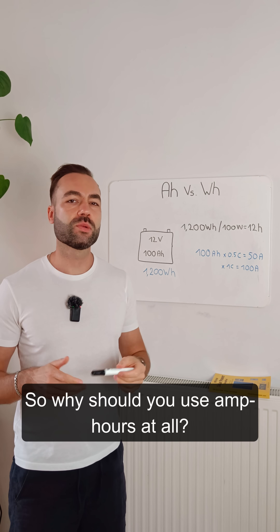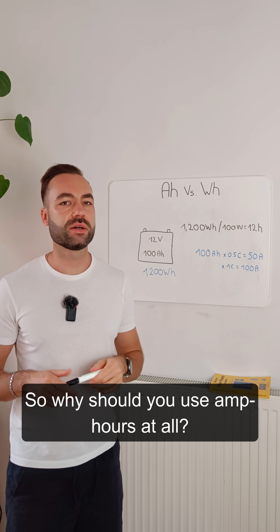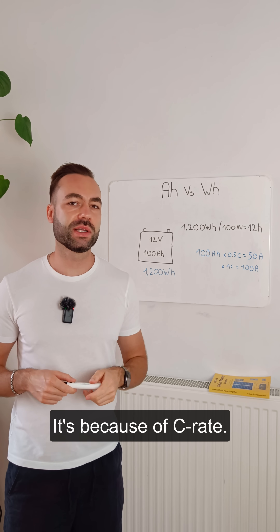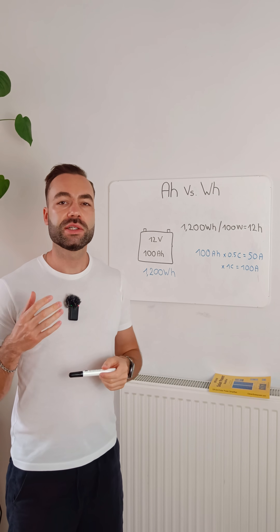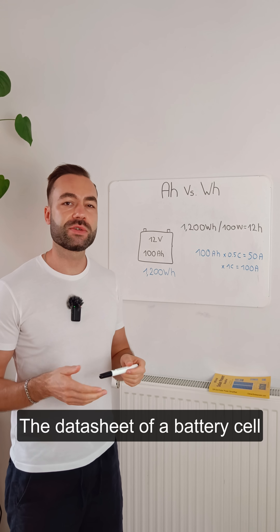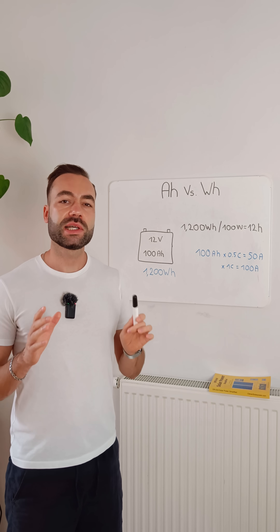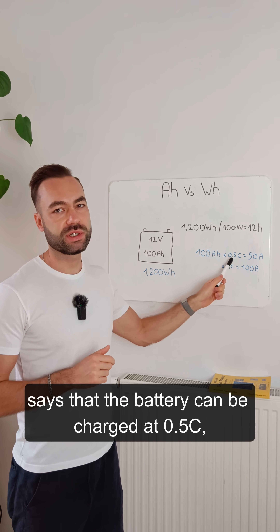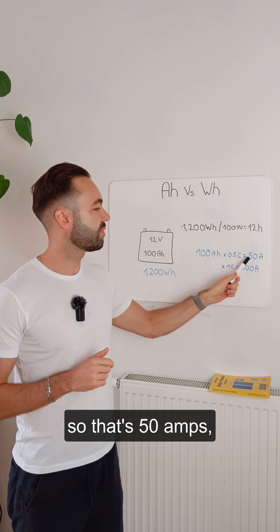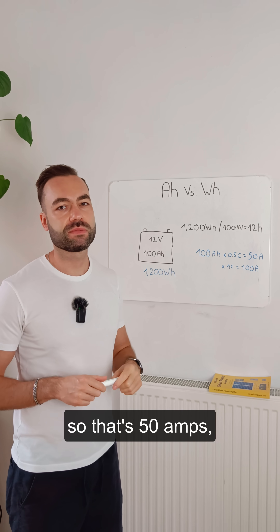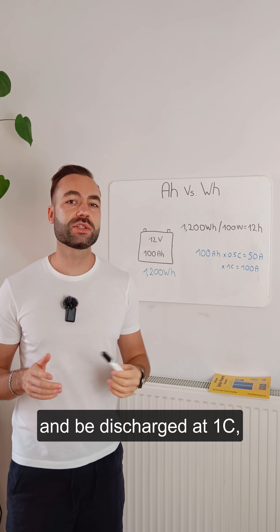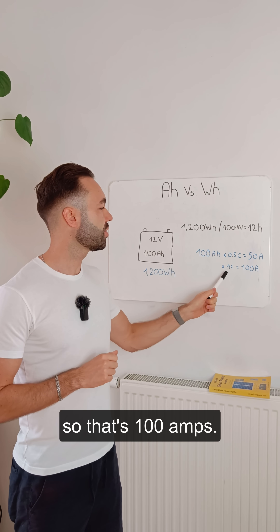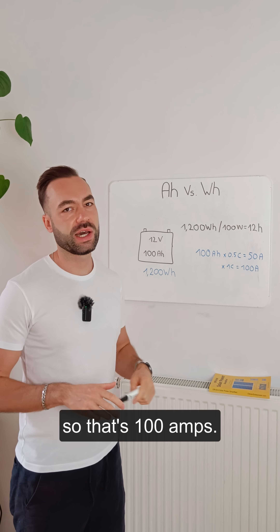So why should you use amp hours at all? It's because of C-rate. The datasheet of a battery cell says that the battery can be charged at 0.5C — so that's 50 amps — and discharged at 1C — so that's 100 amps.